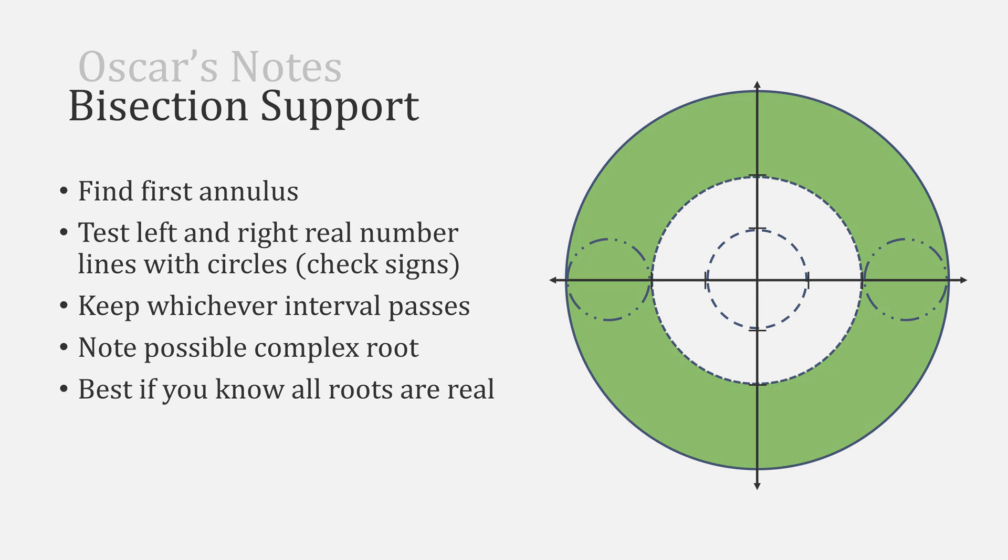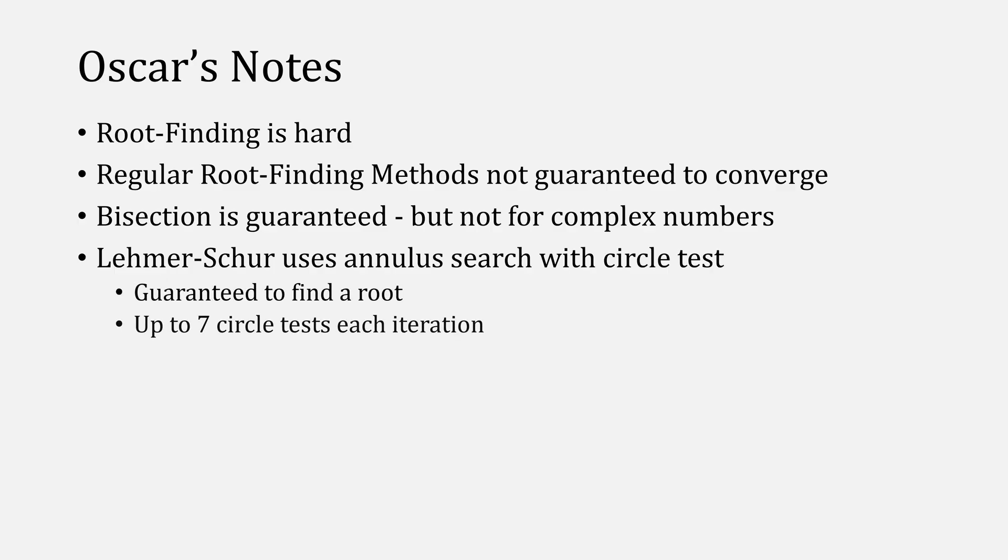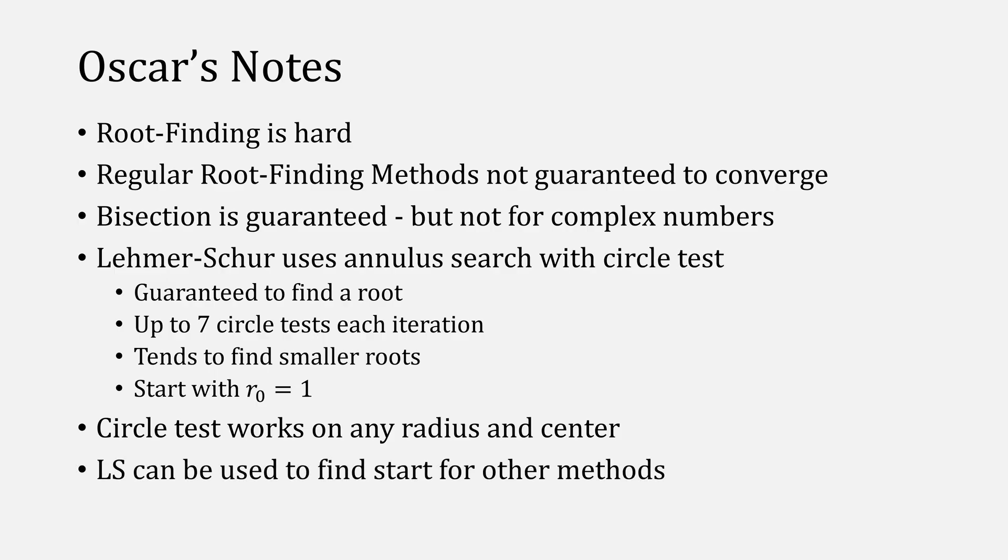To recap, root finding is a hard problem, and there are many solution techniques out there to try and solve it. Regular root finding methods aren't guaranteed to converge, even though methods like bisection are, except it's not guaranteed for complex numbers. The Lemmer's sure algorithm uses an annulus search in the complex plane along with a circle test. It's guaranteed to find a root and can test up to seven circles, with the eighth one passing if the seventh one failed. It tends to find smaller roots, and remember that it starts with a radius of one with the unit circle. That circle test we talked about works on any radius and any center, and Lemmer's sure can be used to find a starting point for other methods like Newton's method. You can also make a full-blown hybrid algorithm like Newton safe, but for the complex plane using Lemmer's sure.